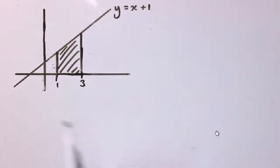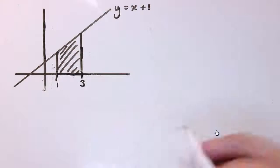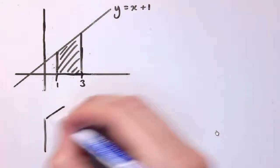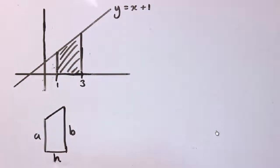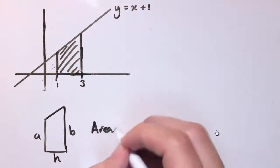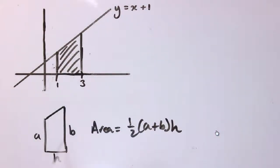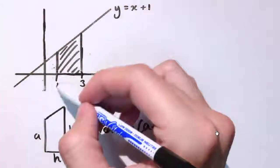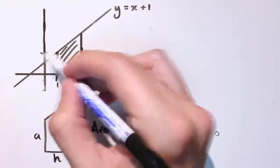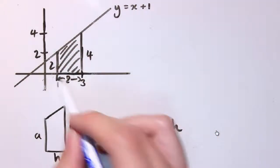Here I've got the line y = x + 1 with the vertical lines x = 1 and x = 3, and they form a trapezium. The formula for the area of a trapezium is one half times (a + b) times h — it's like the average of the two parallel sides times h. With y = x + 1, the y-coordinate is just one more than x, so at x = 1, y = 2, and at x = 3, y = 4. So a = 2, b = 4, and h = 2.